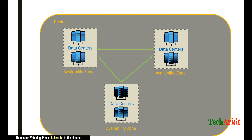Looking at the overall AWS infrastructure diagram, the outer boundary represents one AWS region. Within one region you have multiple availability zones, and within each availability zone you have multiple data centers. Some availability zones contain three to four data centers, some contain one to three — it depends on the location and resource requirements.